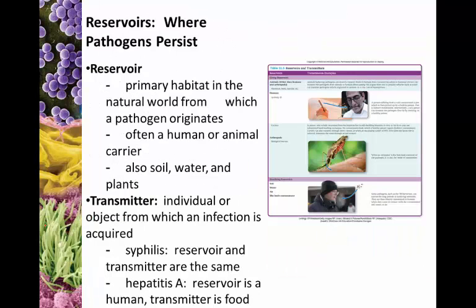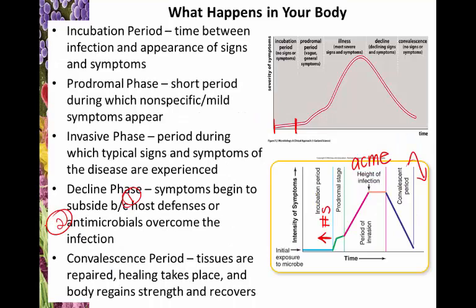Then eventual movement toward wellness and a convalescence period, where tissues are repaired and healing begins to take place. At this point it's not necessarily the case that you cannot spread the disease — there are several diseases people can still spread as convalescent carriers. They're getting better and no longer sick, but are still able to spread the disease, while regaining strength.